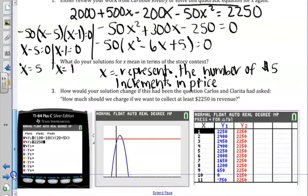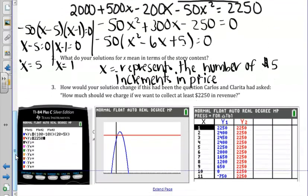So now they're going to change what the question says. And now they're saying, how much should we charge if we want to collect at least $2,250?